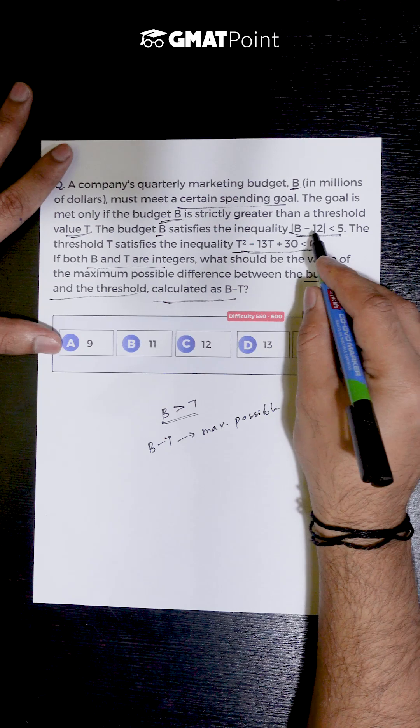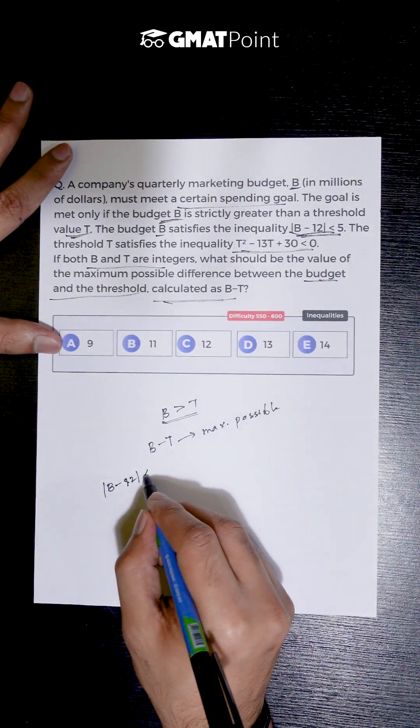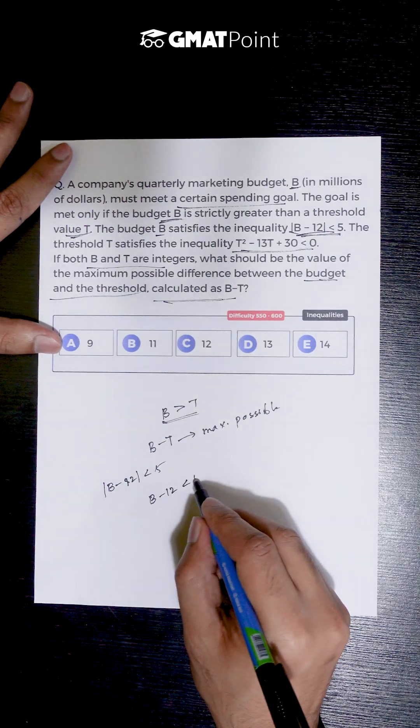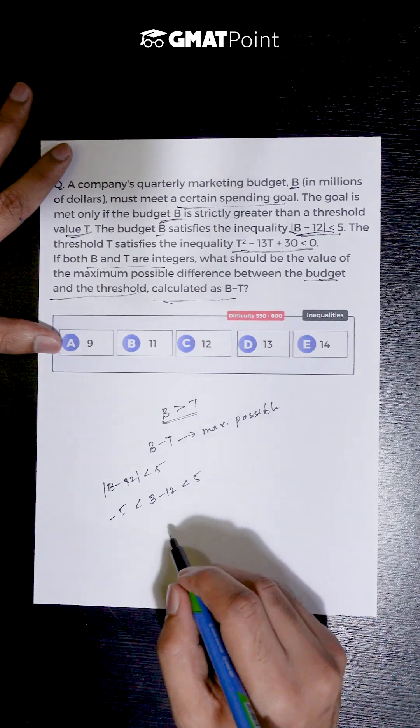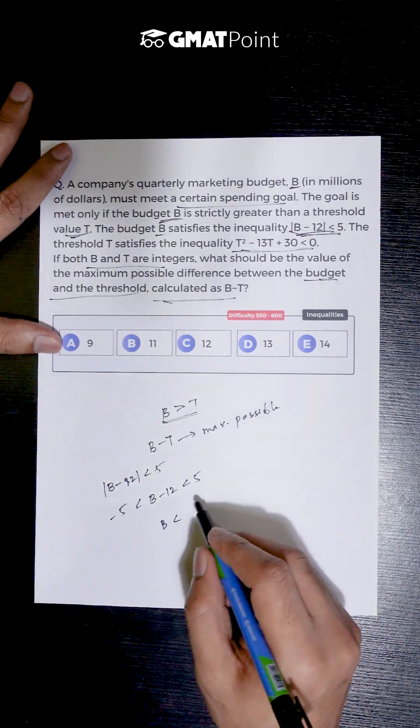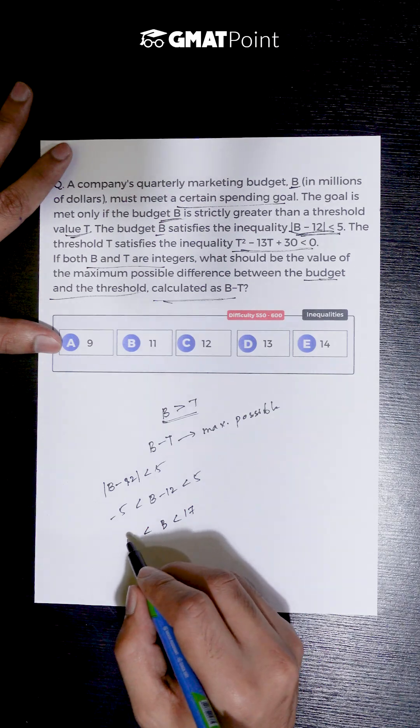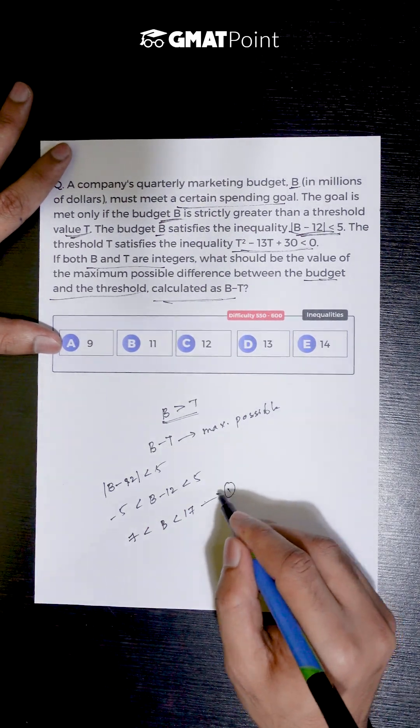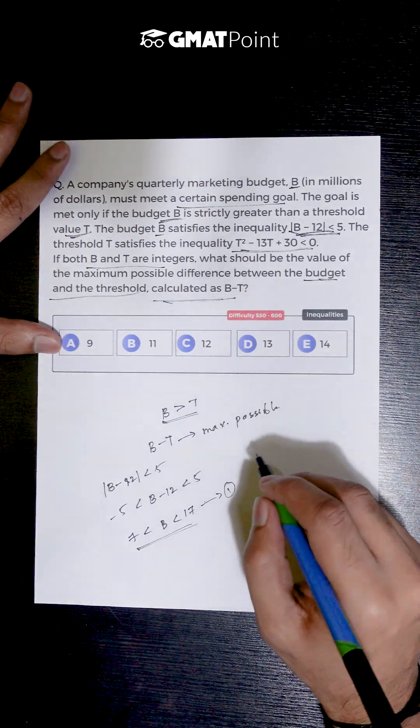We are given an inequality for the value B, which is |B - 12| < 5. Upon removing the modulus, we get B - 12 to be less than 5 or greater than -5. Adding 12 to this inequality, we get B < 17 and B > 7. So this is the first inequality, and these are the values in which B lies.